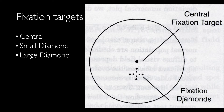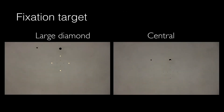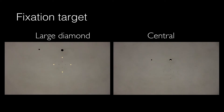In the home frame machine we have three fixation targets: central, small diamond, and large diamond. Generally we use diamonds in those patients with poor central vision, like age-related macular degeneration. This video presents the large diamond on the left side and central fixation target on the right side. The patient is supposed to look at the fixation target all the time that the stimuli are presented.